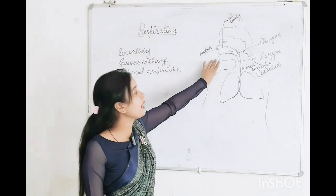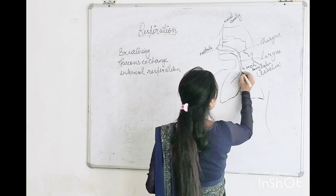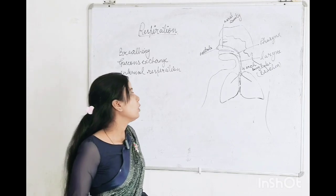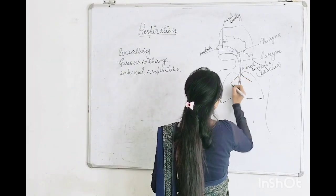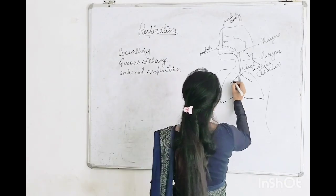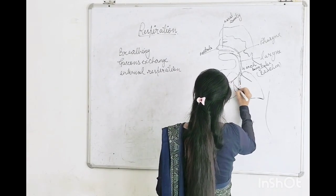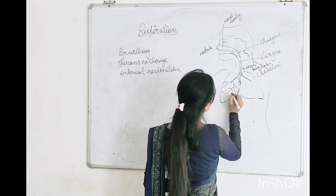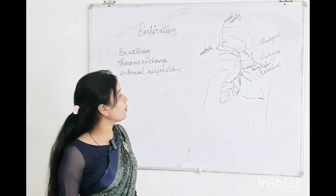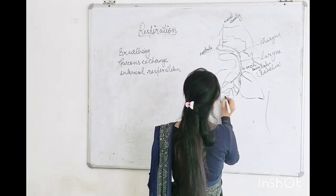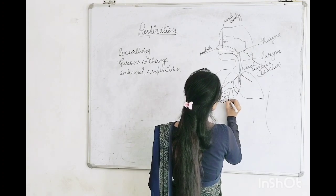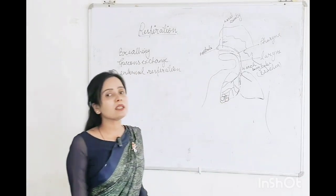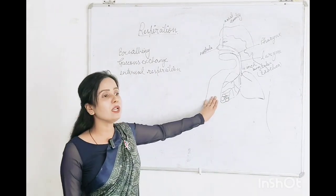After passing into the trachea, it divides into two tubes called bronchi — the singular word is bronchus. This bronchus divides further into secondary bronchi, and secondary bronchi divide further into tertiary bronchi. Ultimately, the air passes into the alveoli, which is a cluster-like sac structure present in the lungs.